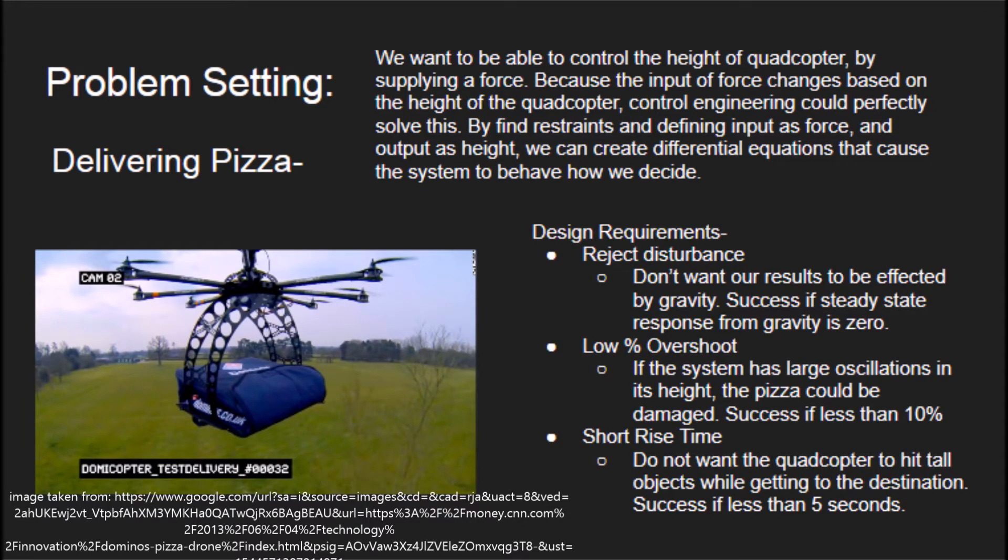We have set three design requirements for our drone. The first is to reject disturbance because we do not want the force of gravity to affect our height. Second is to have a low overshoot to help minimize oscillation and prevent damage to the pizza. The third design requirement is to have a short rise time so the copter can get to its desired height as fast as possible and avoid tall objects on the way to its destination.